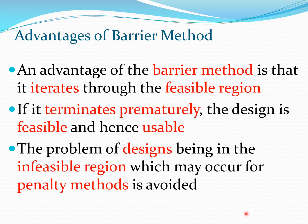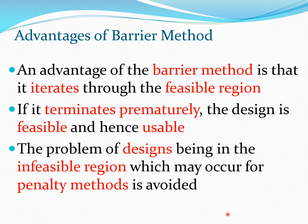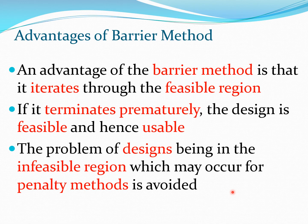One advantage of the barrier method is that you stay in the feasible region. If for some reason you terminate prematurely or the algorithm gets stuck, the design you have is feasible and hence usable. All intermediate design points x_k, x_{k+1}, x_{k+2}, and so on are all usable because they satisfy the constraints — especially important for computationally expensive problems. By contrast, penalty methods often push the design into the infeasible region, moving from the non-feasible to the feasible region, so some intermediate designs may not be usable.